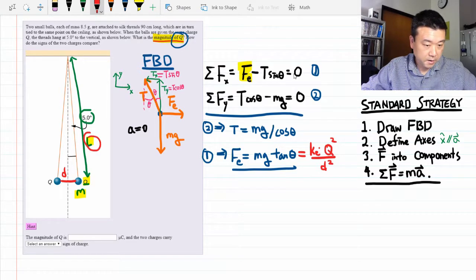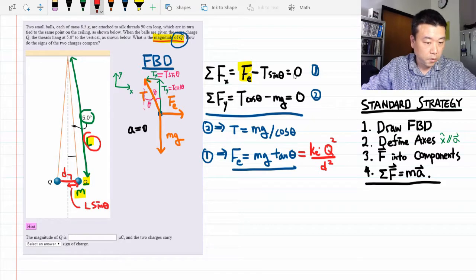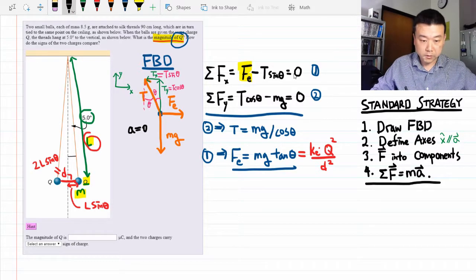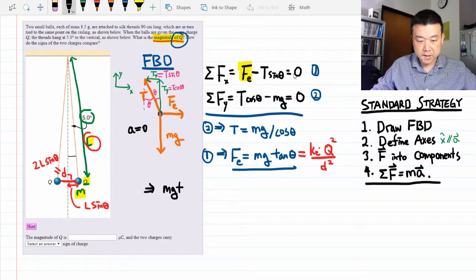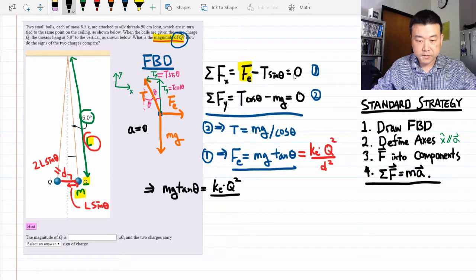So we can figure out the length of this leg here. We have a right triangle, so this leg is L sine theta. So the overall distance between the two charges should be 2L sine theta. All right, plug in all that information. This is the equation we get. Mg tangent theta is equal to Coulomb's constant times q squared divided by 4L squared sine squared theta. Okay, let's solve it for q.